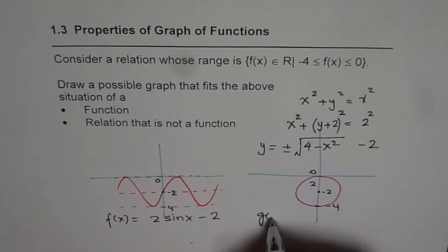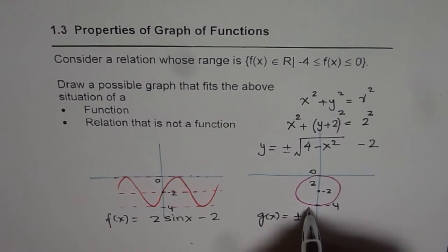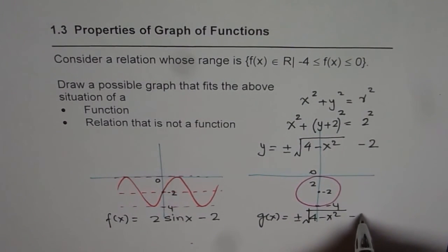So that is the equation which we can write. So we can write this as, let us say g(x) = ±√(4 - x²) - 2.